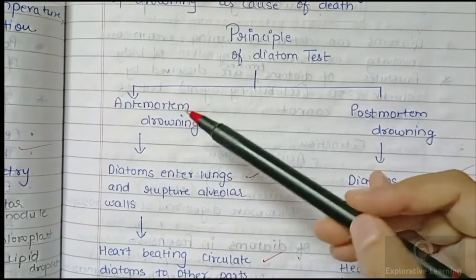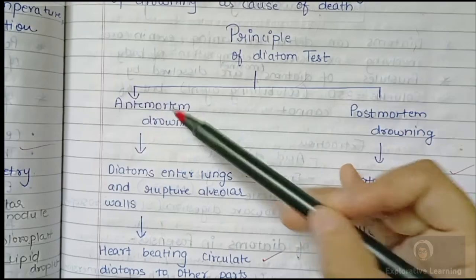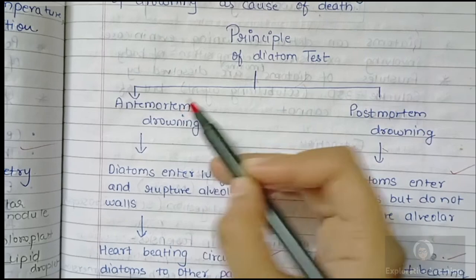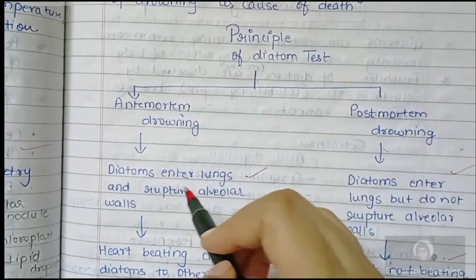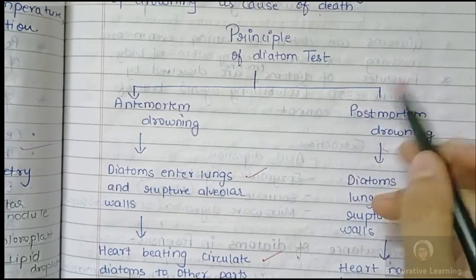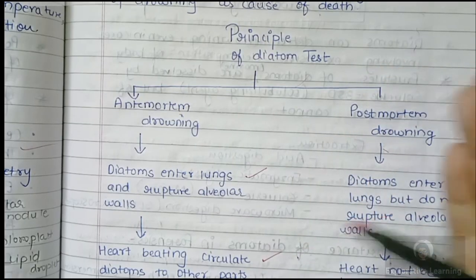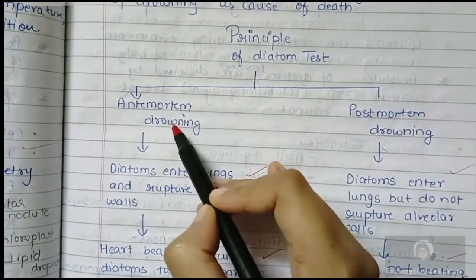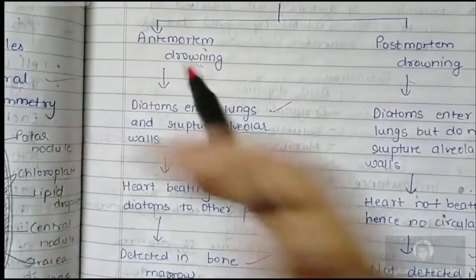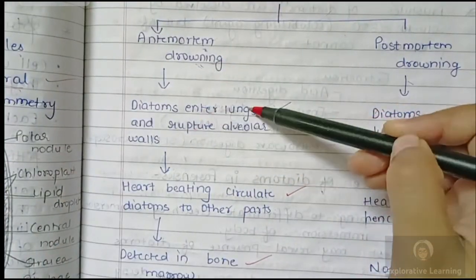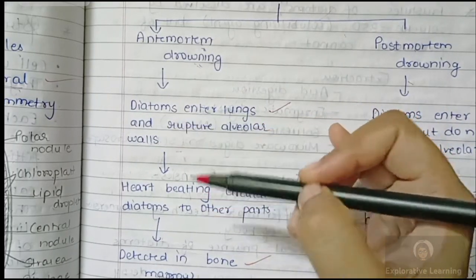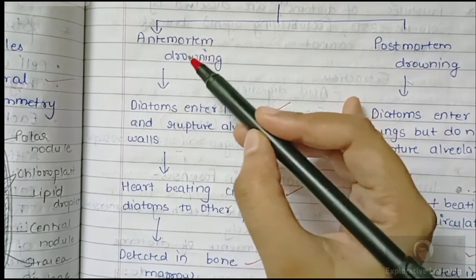The principle of the diatom test: drowning could either be antemortem or postmortem. Antemortem drowning means drowning took place when the person was alive. Postmortem drowning means the dead body was thrown into the water body after the death of the person — meaning this may not be actual drowning but rather a concealment of death. In antemortem drowning, the person is alive, so diatoms can easily enter the lungs and rupture the alveolar wall.